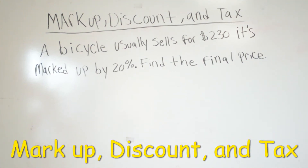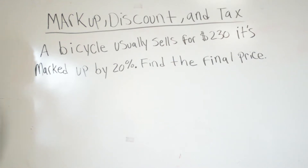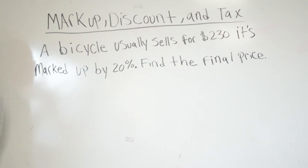Today's video we're going to be talking about markup, discount, and tax. An example of a markup: the iPhone a couple years ago was about $200; now that everybody wants an iPhone, Apple marked the price up, meaning it costs more now than before. An example of a discount can be clothes at the mall — regular price can be $30 or $50, and it's discounted, meaning you're gonna pay less, like 20% or 30% off, whatever the store wants.